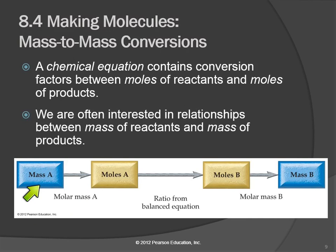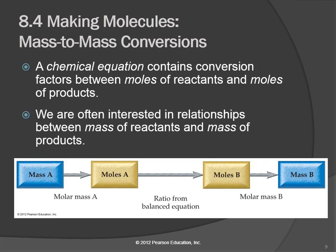If we have a mass of compound A, we can figure out the number of moles using the molar mass — you add up the atomic masses from the periodic table and figure out how much one mole of that substance weighs. That is a conversion factor that allows us to convert from grams to moles. The middle part, moles to moles, is what we learned on Tuesday: we look at the balanced chemical equation and figure out how many moles of A to how many moles of B. Then to get from moles of B to the mass of B, we use the molar mass from the periodic table.